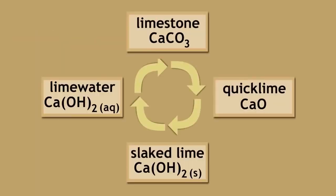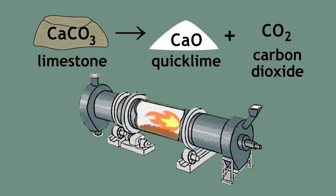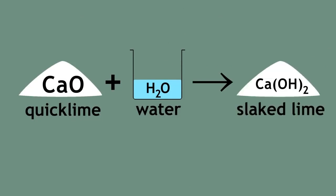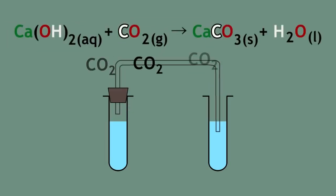We have now completed the limestone cycle. To recap the limestone cycle, limestone can be thermally decomposed to form quicklime and carbon dioxide. Quicklime reacts with water to form slaked lime. Slaked lime dissolves in water to form lime water. Lime water reacts with carbon dioxide to form calcium carbonate, the main component of limestone.